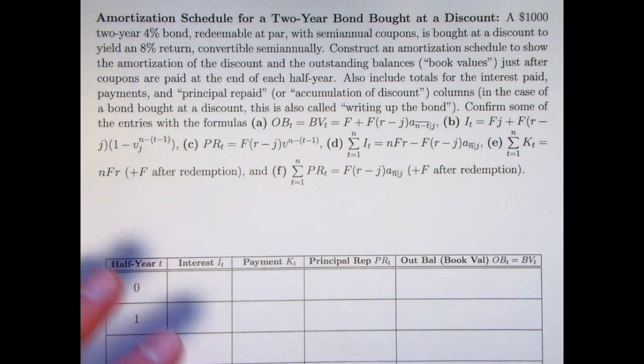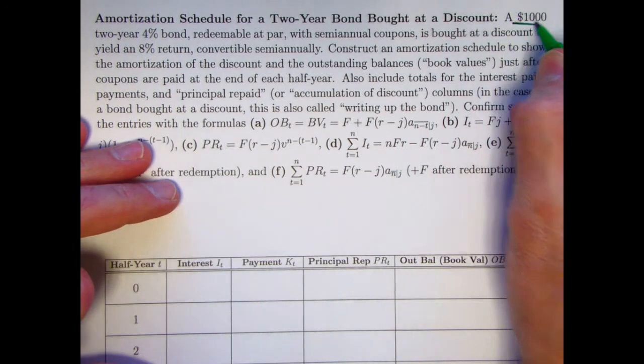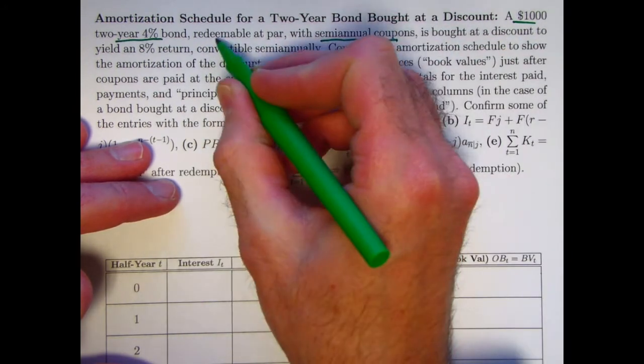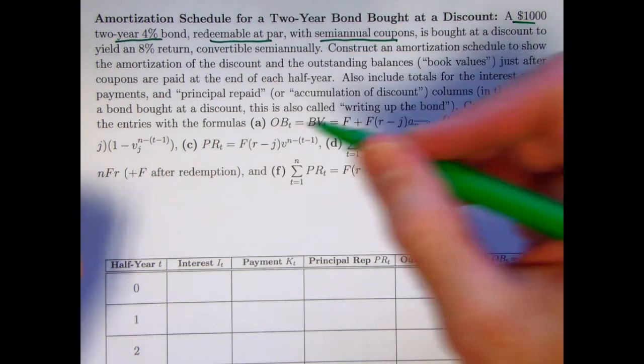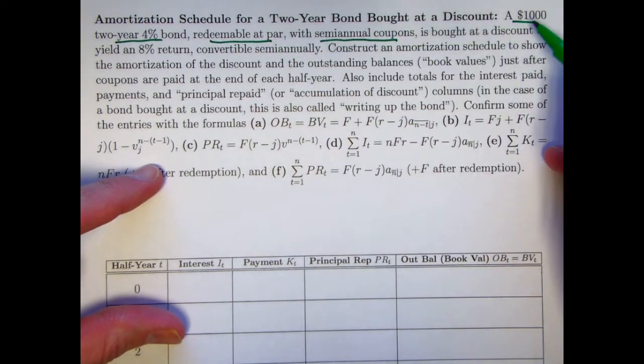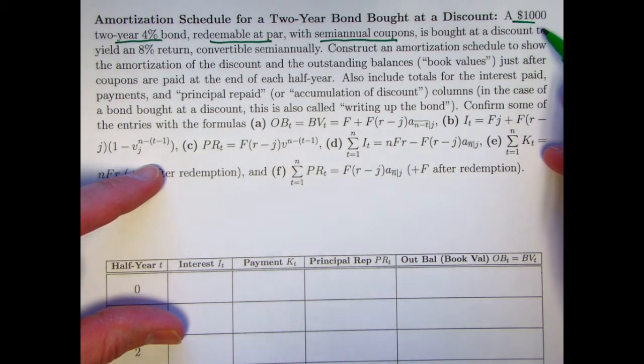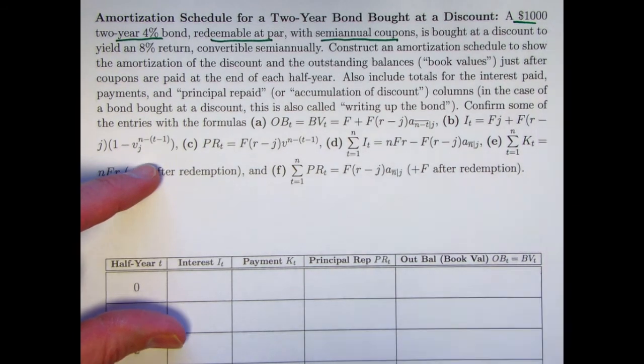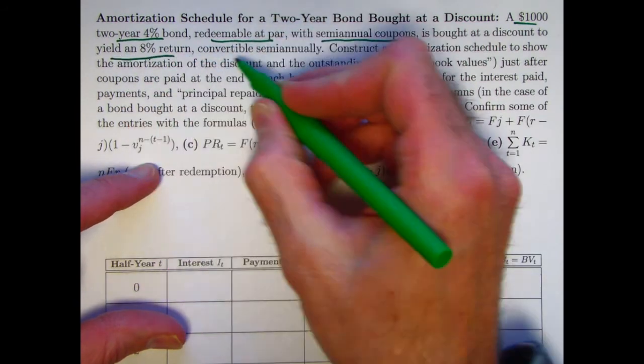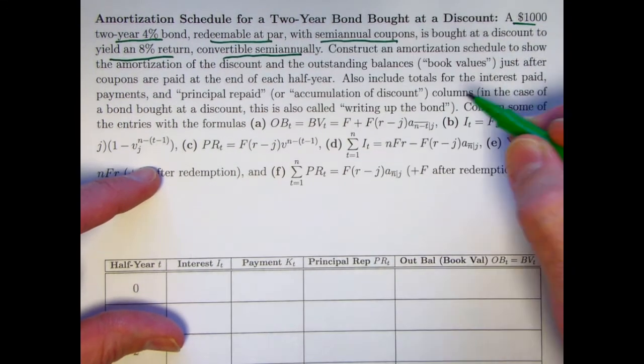So here is the situation. A thousand dollar, two-year, 4% bond, semi-annual coupons. It's redeemable at par, so the semi-annual coupon rate is 2%. You're going to get $1,000 at the end of two years. Its yield is 8% convertible semi-annually, so that would be 4% per half year.